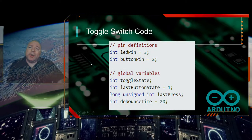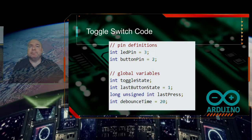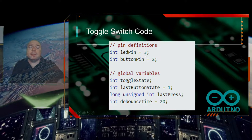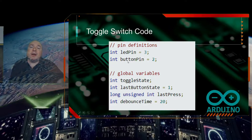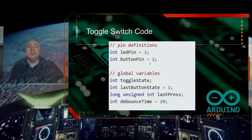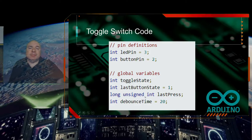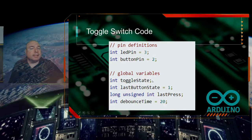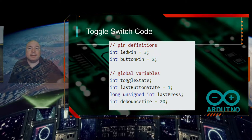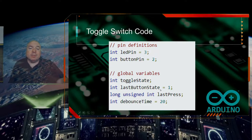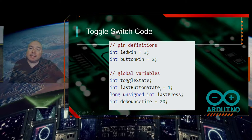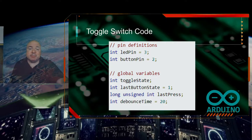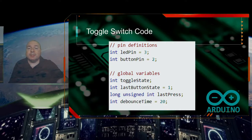Let's dive into our code for the toggle switch. First we'll set up some global definitions. We're going to set our LED pin to pin 3 — remember that when building the circuit — and set our button pin to pin 2. We also have extra variables: the first is toggle state, which we're not assigning a value to yet. Then we have last button state, which keeps track of whether our button was pressed or unpressed the last time, so we know when it should toggle.